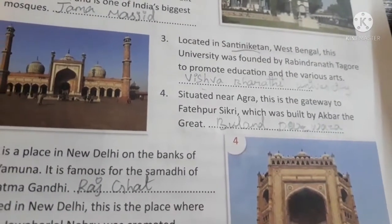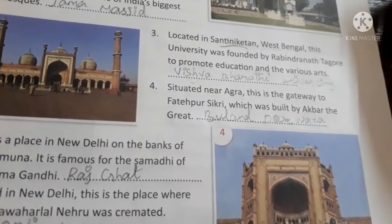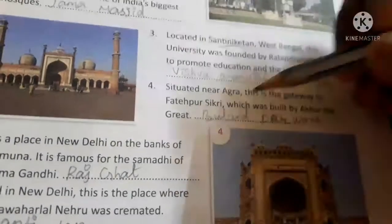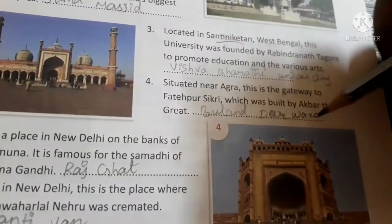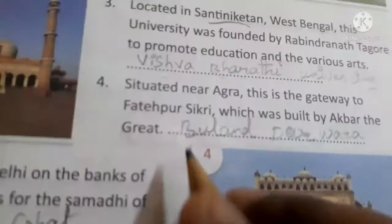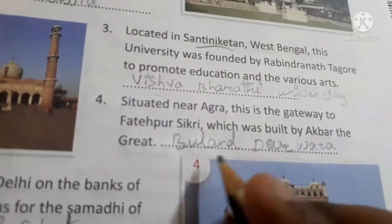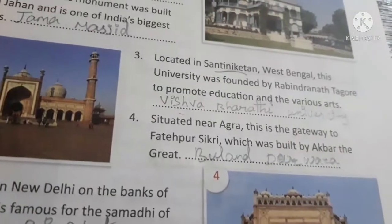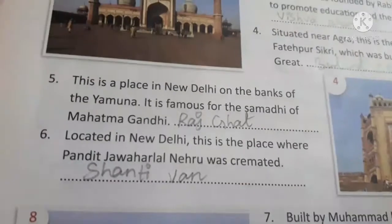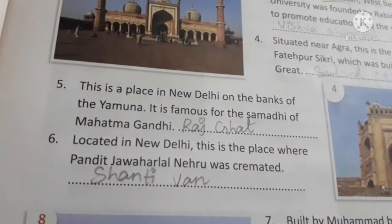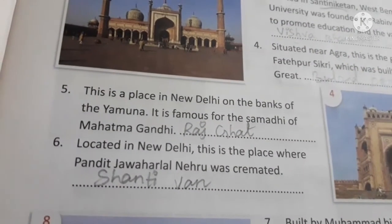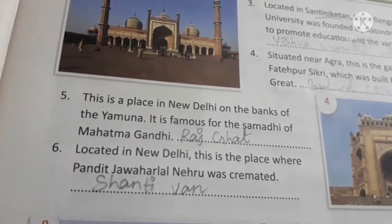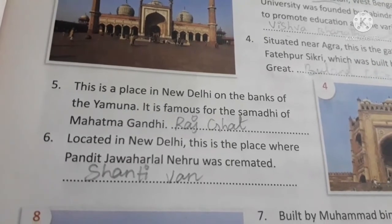Situated near Agra, this is the gateway to Fatehpur Sikri, which was built by Akbar. It is called Buland Darwaza (B-U-L-A-N-D D-A-R-W-A-Z-A).